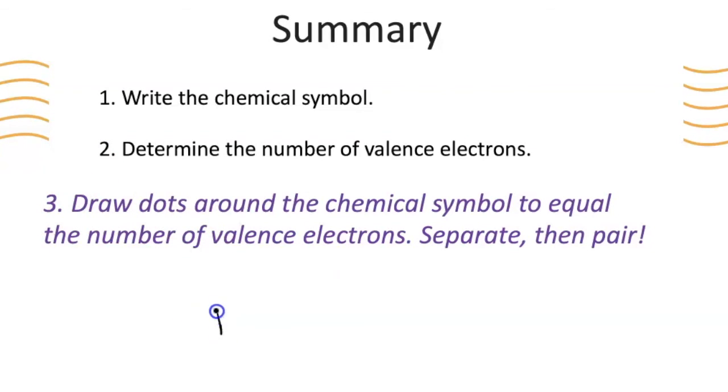For example, nitrogen, which has five valence electrons, we will spread them out first, then pair them up. But what we would not do is pair them up as we draw. This is not correct. This one is correct.